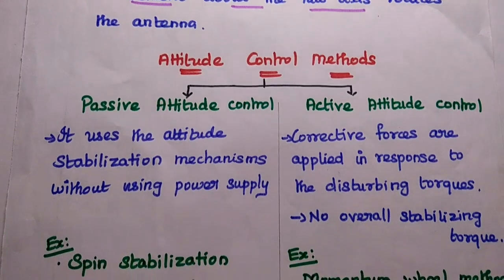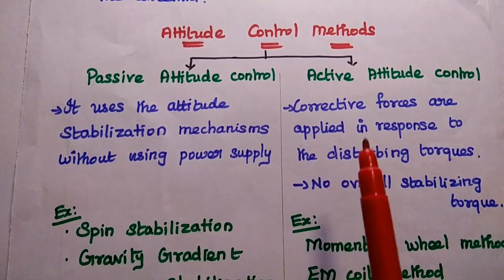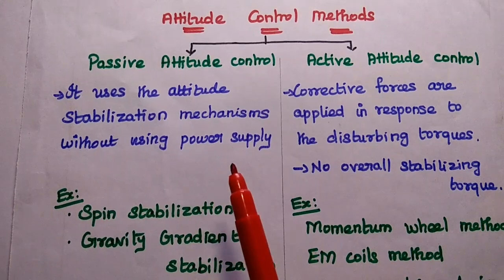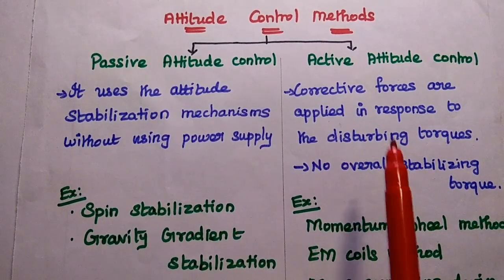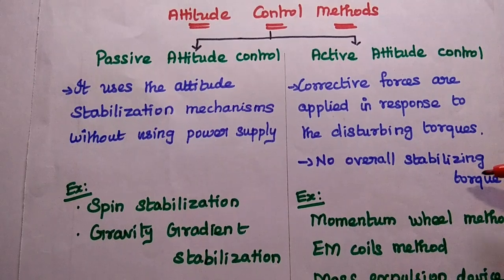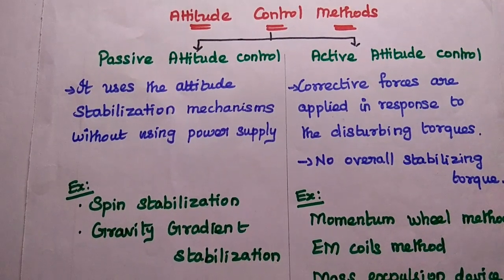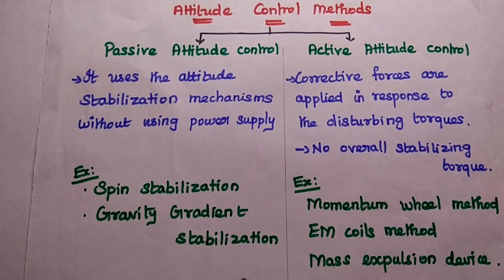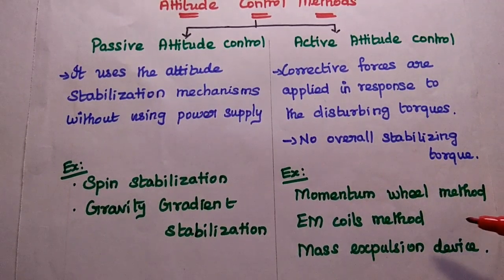Next, we discuss attitude control methods — how to control the orientation of a satellite. There are 2 types: passive attitude control and active attitude control. Passive attitude control uses stabilization mechanisms without requiring a power supply. In active attitude control, corrective forces are applied in response to disturbances. Examples of passive methods are spin stabilization and gravity gradient stabilization. Examples of active methods are momentum wheel, electromagnetic coils, and mass expulsion devices.